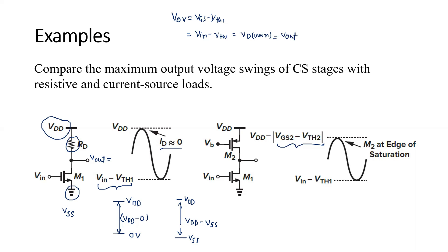So the output voltage swing is defined between the maximum and minimum output. For the second figure, the maximum output is VDD minus the overdrive voltage of M2, while for the first figure it was VDD. So the output voltage swing for figure one is more than the output voltage swing of the second figure.